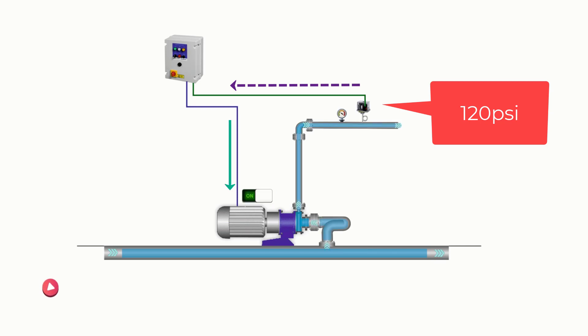The jockey pump kicks in and starts pumping water into the system. It continues running until the pressure reaches our cut-out value of 140 PSI.